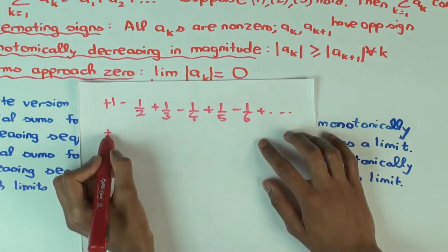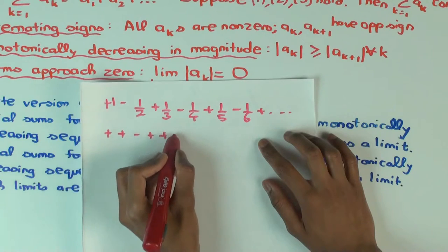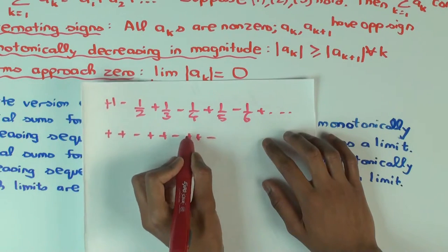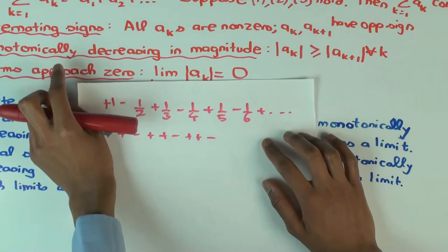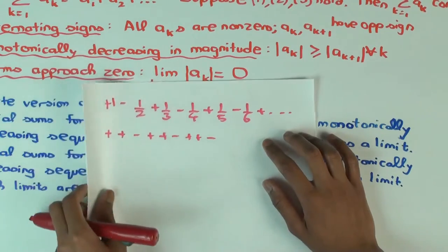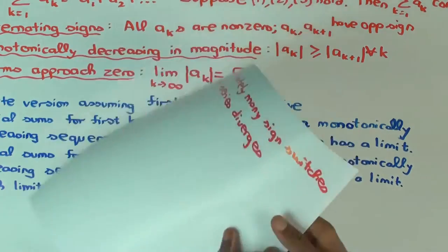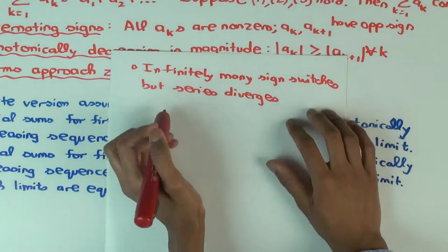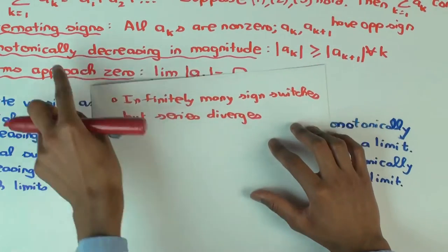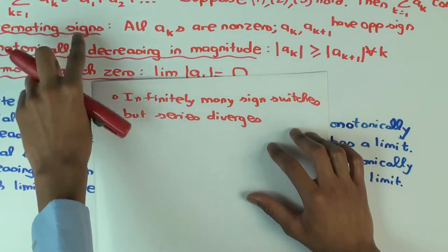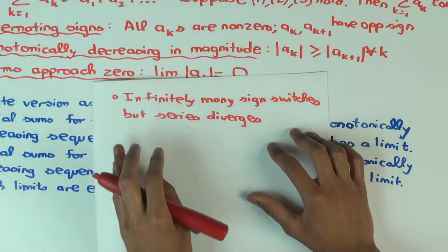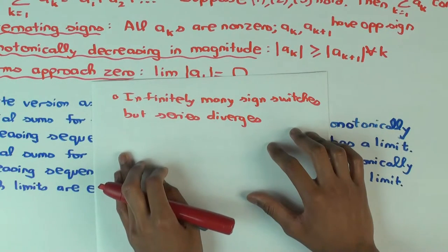If I had a pattern like plus, plus, minus, plus, plus, minus — something like this — then even if the other two conditions were satisfied, I could still construct something which doesn't converge. Can you think of a series which has conditions two and three satisfied, and instead of strict alternation, the sign just switches between plus and minus infinitely many times, but the series doesn't converge?